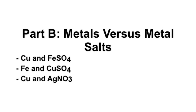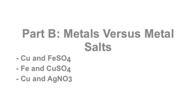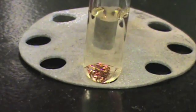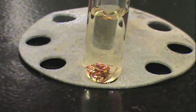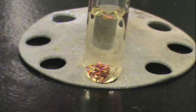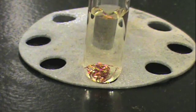In part B of this lab, we will react different metals with metal salts. In the first part, we will react copper with iron sulfate, and we see that even after several seconds, there is no reaction between the copper and the iron solution.